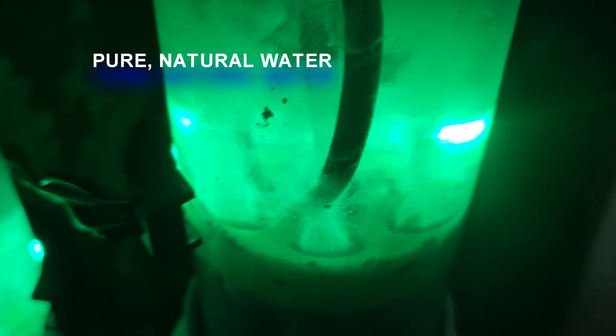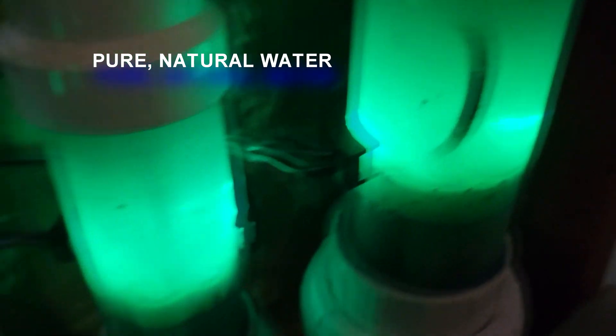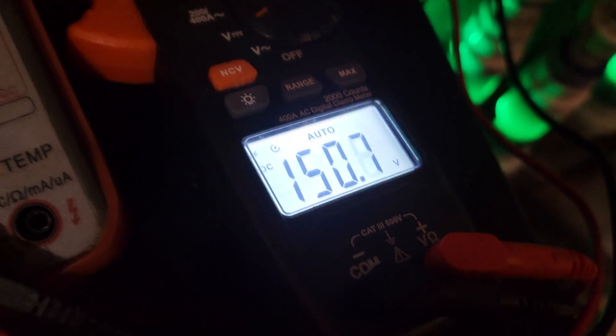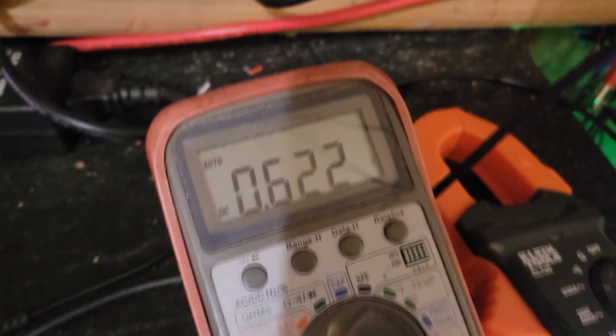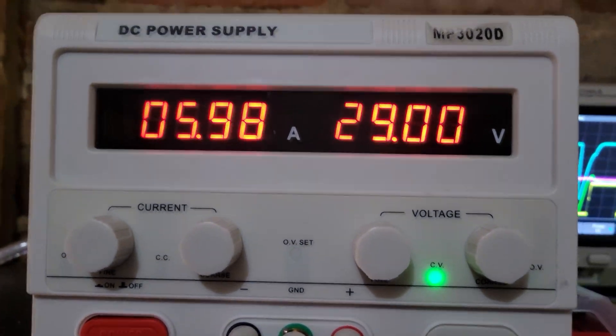Here we go. Pushing 150 volts on that cell. 600 milliamps. Actual consumption through my circuit.